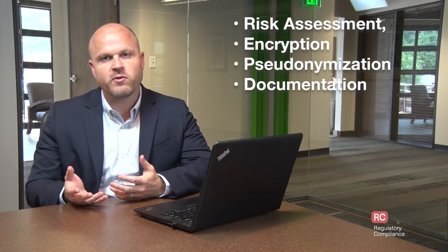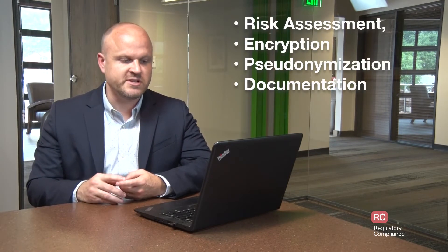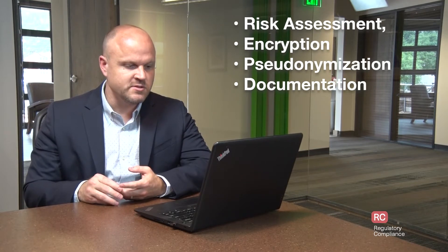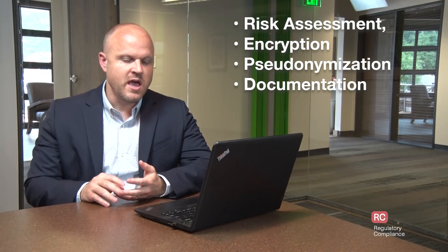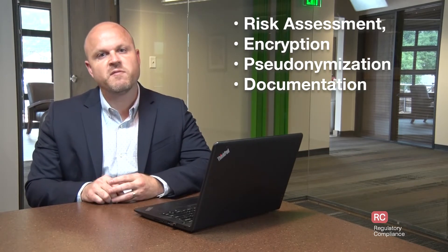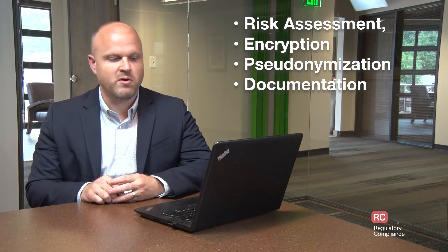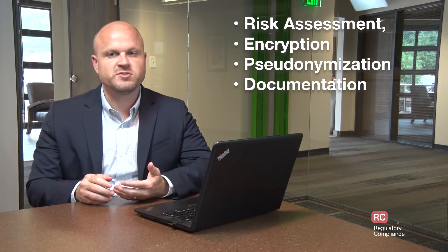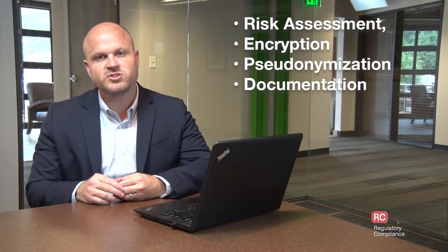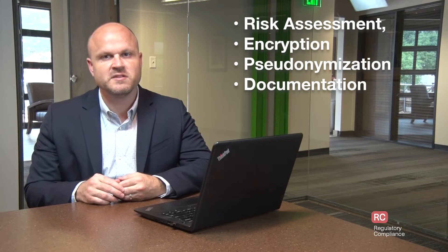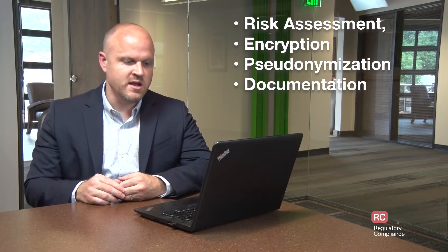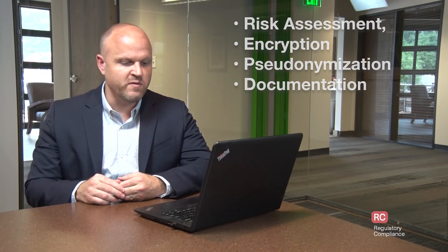Some examples of appropriate organizational and technical controls include risk assessments, encryption, pseudonymization, and documented information security policies that cover things like business continuity, physical security, logical access, configuration management, human resources, and management oversight.